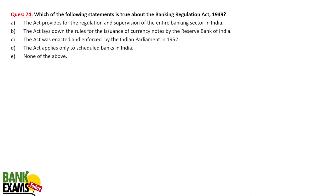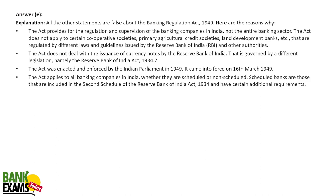Which of the following statements is true about the Banking Regulation Act? The act provides for the regulation and supervision of banking companies in India — not the entire banking sector broadly. Notably, the act does not apply to cooperative societies, even though they conduct banking business. The act does not deal with the issuance of currency notes. It was enacted by Indian Parliament in 1949 and came into force on 16th March 1949, applying to all banking companies in India whether scheduled commercial banks or non-scheduled.